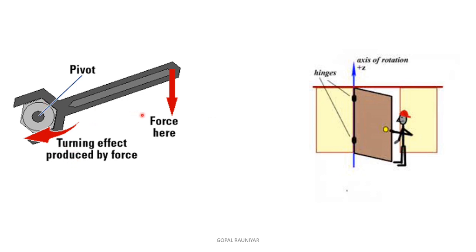Take another example: a spanner. If we try to loosen a nut, we take a spanner. The nut is pivoted and we apply force to turn the spanner — the nut will loosen. This produces a turning effect of force. The nut is fixed, and after applying force, it produces a turning effect — the same principle as with the door.